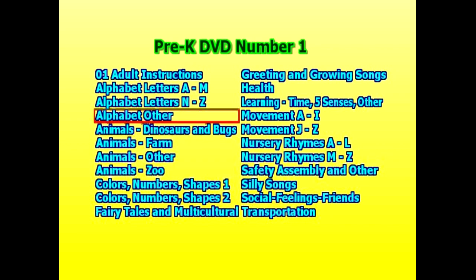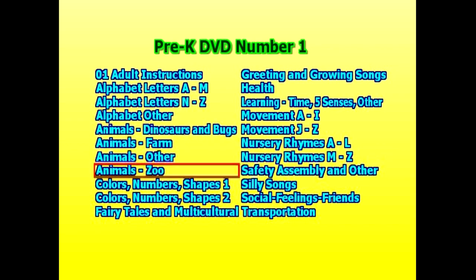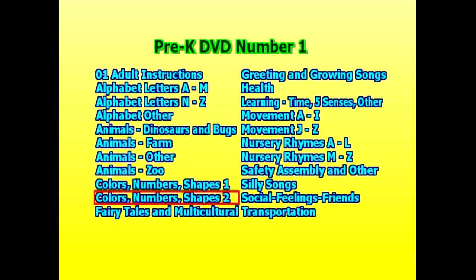Here you see all the other folders: Alphabet Other, Animals, Dinosaurs and Bugs, Farm Animals, Other Animals, Zoo Animals, Colors/Numbers and Shapes number one, Colors/Numbers and Shapes number two. Some of these have more than one folder because there are so many songs.